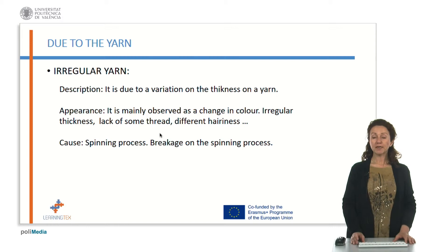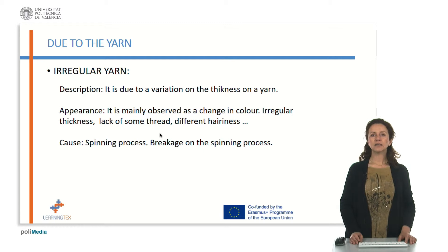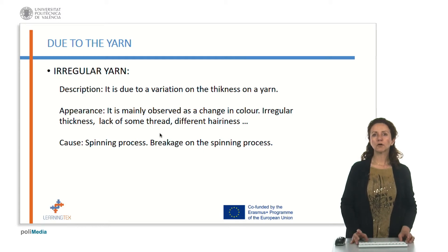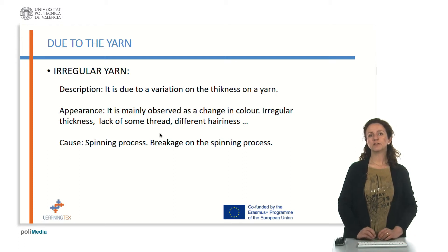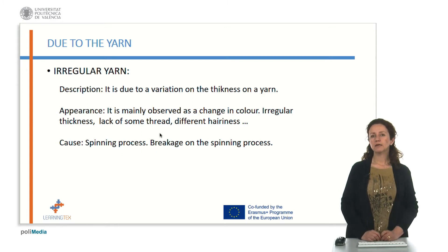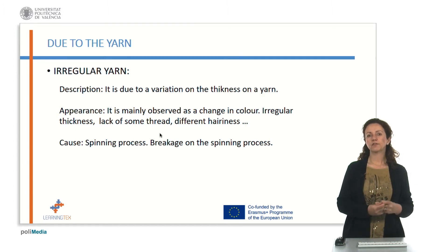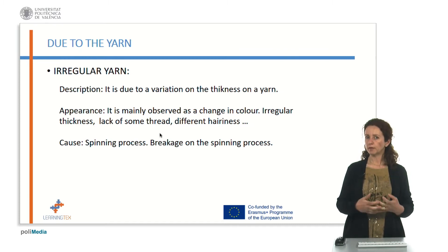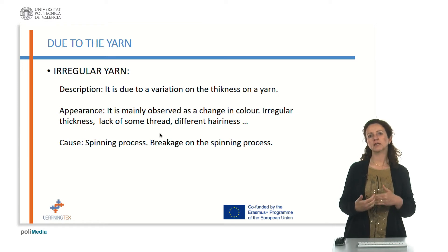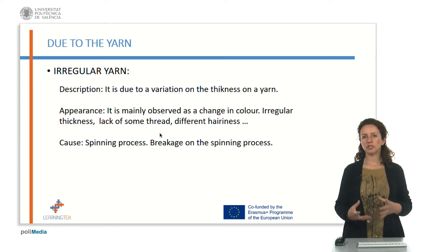About the appearance of this defect, we can say that it is mainly observed as a change in color, or basically because we change the thickness — there are lack of some threads, different hairiness. So it's a difference in the structure. Sometimes we can observe a difference in the color of the fabric, mainly due to the fact that we can observe neighboring yarns, and then it makes a difference in the shape of the fabric.